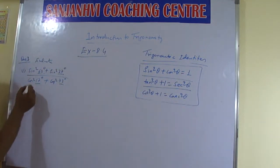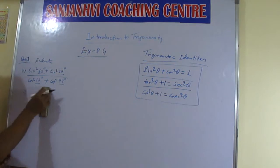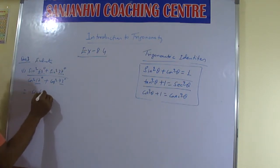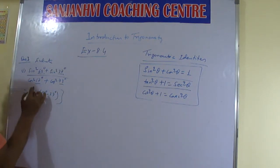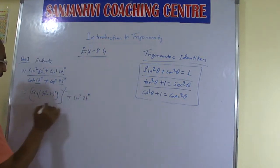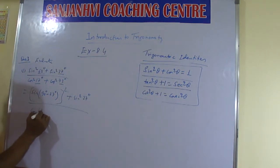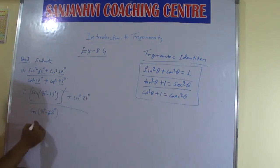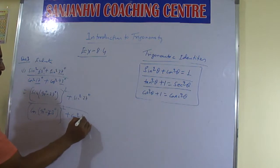So now sin square 63 degree — 63 degree will be equal to sin(90° - 27°), square. Plus sin square 27 degree. Now cos(90° - 73°), square, plus cos square 73 degree.